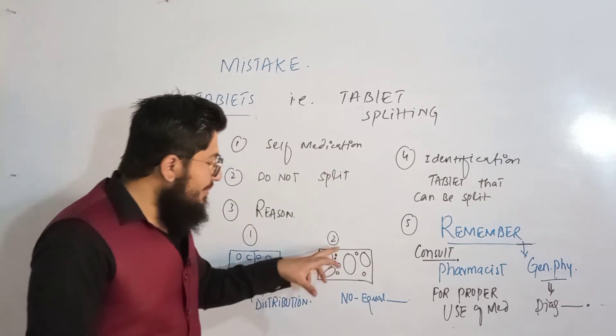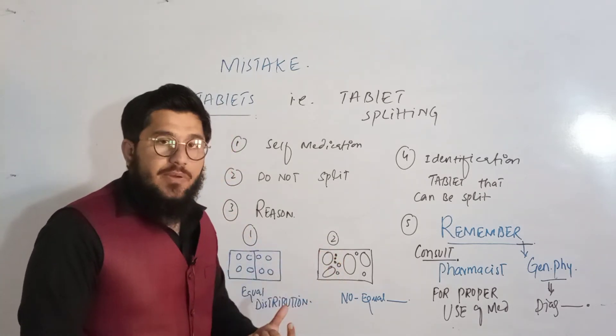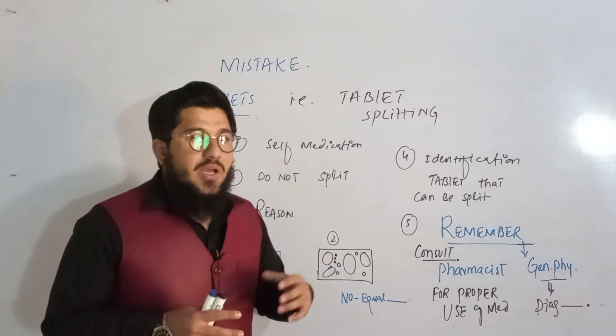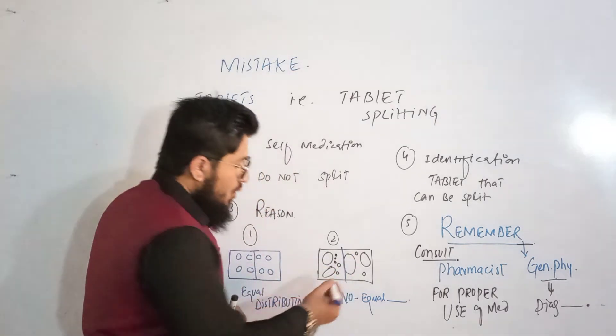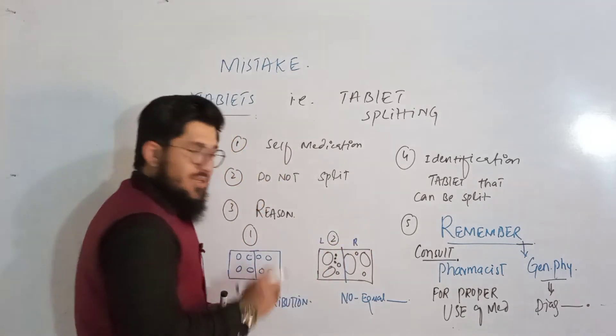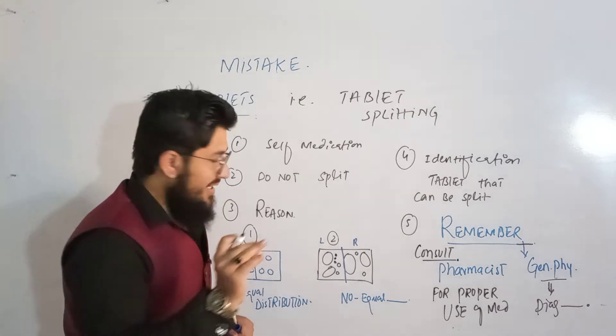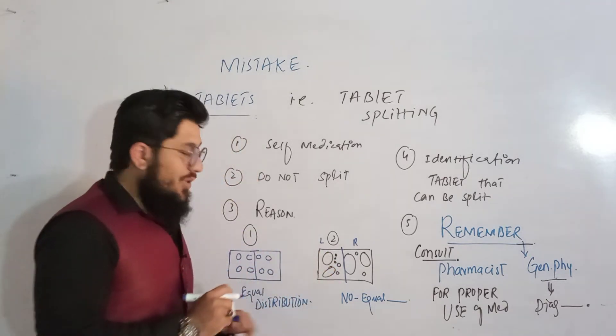If you break this tablet into two, if you split this tablet into two, then what will happen? This will cause abnormal effect. The reason behind is very simple: suppose you break it here. Now on the right side you got one, two, three, four circles - four chemicals. And on the left side you got one, two, three, four, five, six, seven chemicals. Now there is a kind of unequal distribution - no equal distribution of the chemicals.